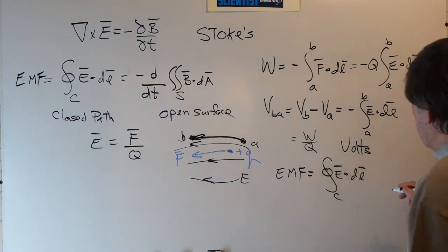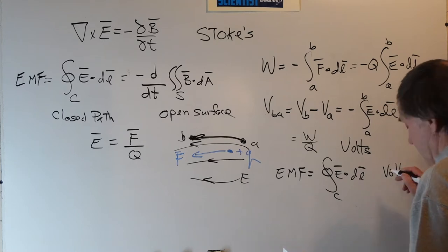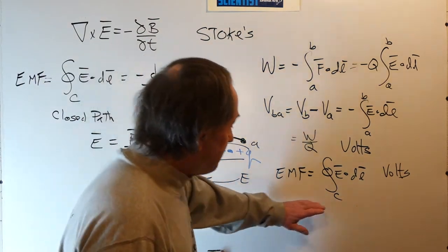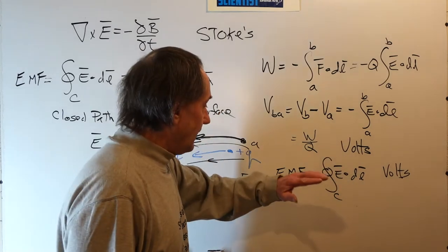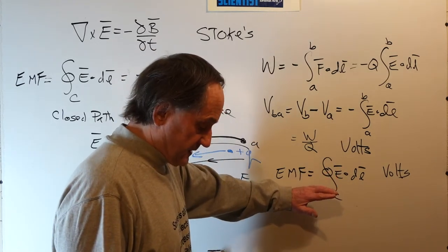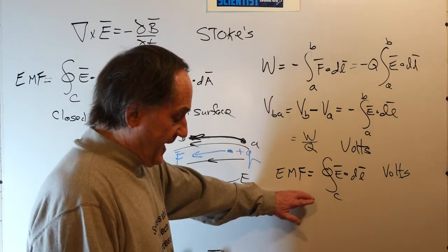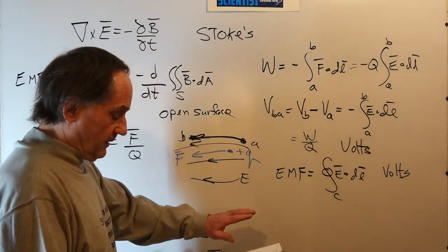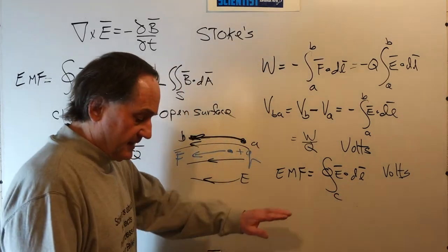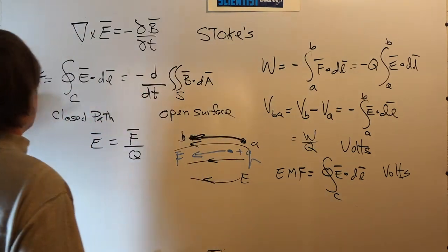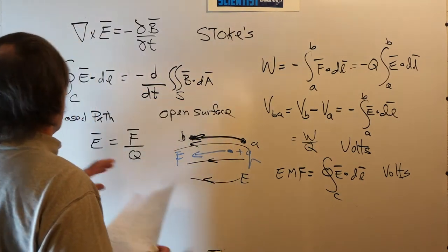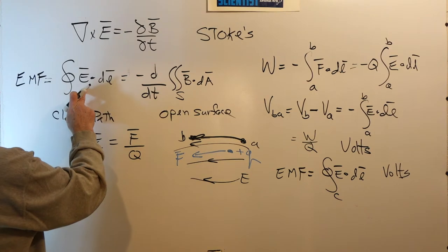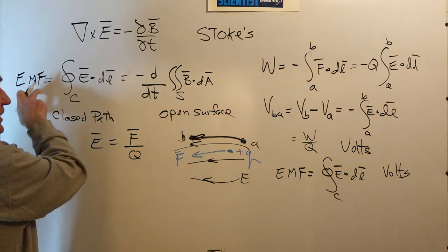EMF, the electromotive force, is a scalar measured in volts. It is a voltage about a specific closed path, and that path has to be specifically called out. The EMF is path dependent in a non-conservative system — if any part of the path is changed, then the EMF, in general, also changes. This is an expression of a non-conservative system.